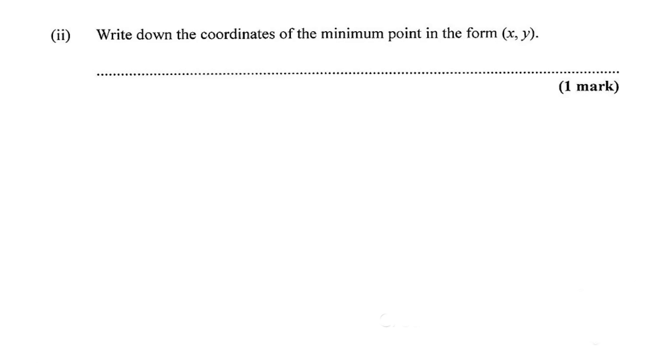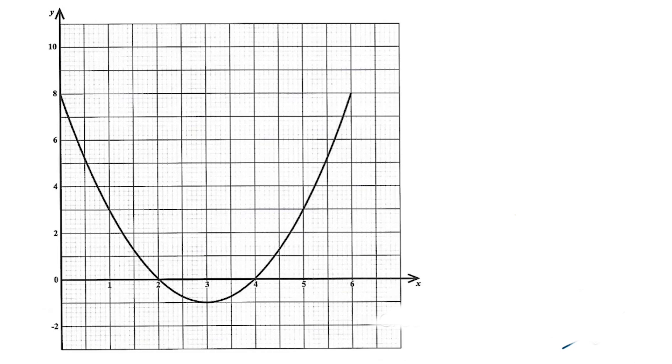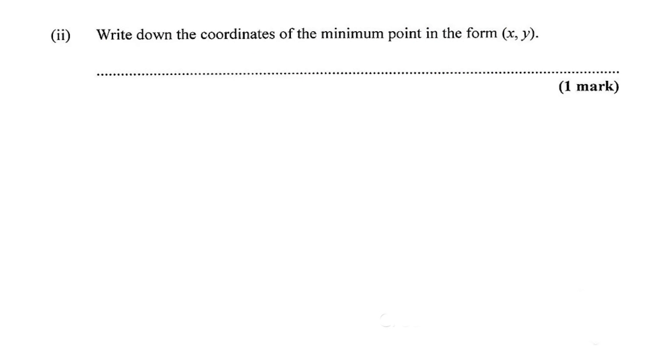Next, write down the coordinates of the minimum point in the form (x, y). Let's look back at the graph. The minimum point is the lowest point on the graph. The minimum point, what is your address? It's 3 on the x and negative 1 on the y, so (3, -1). You call the x coordinate first, so that's (3, -1). Easy, you're collecting marks on this.